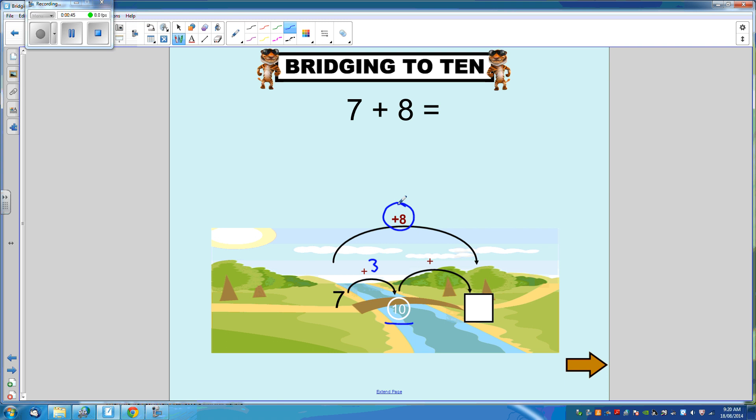So here we look at what we've already added to get to the decade, 10. So we've added 3. We need to add 8. So 3 plus what else equals 8? 3 plus 5 equals 8.